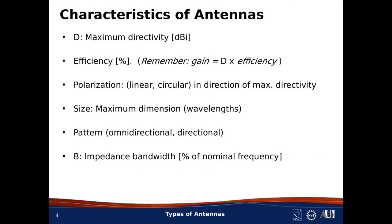Here are the characteristics we'll discuss. The first is maximum directivity, which I'll give the symbol D and state in units of dBi. Second is efficiency — the fraction of power properly transferred relative to an ideal lossless antenna. Recall that gain is directivity times efficiency. Third is polarization, usually linear or circular, which I'll always state in the direction of maximum directivity.